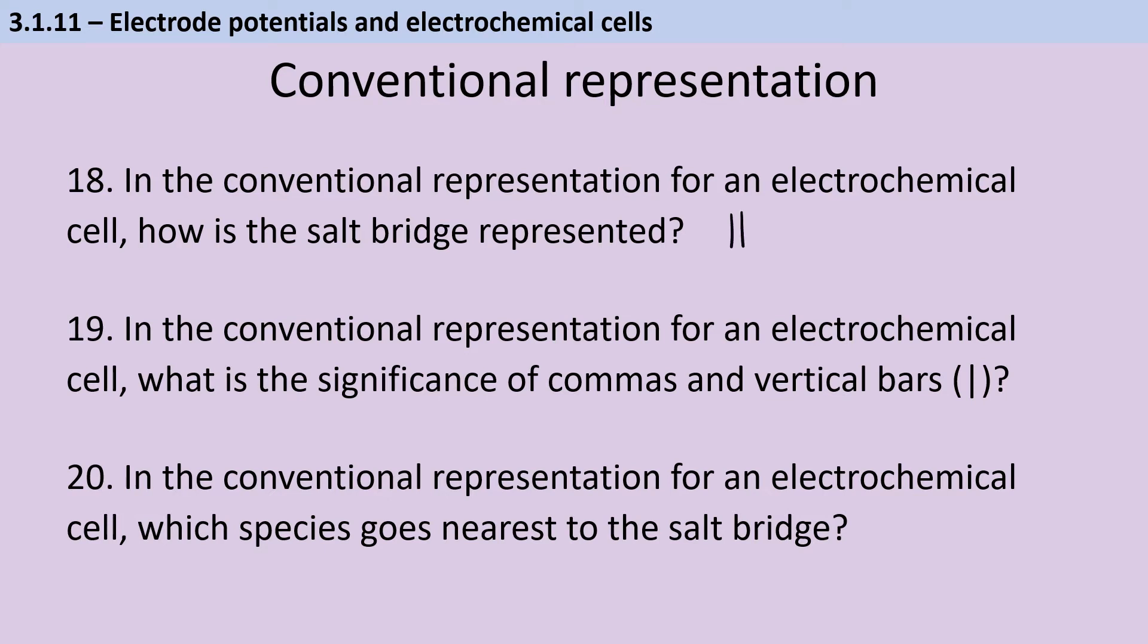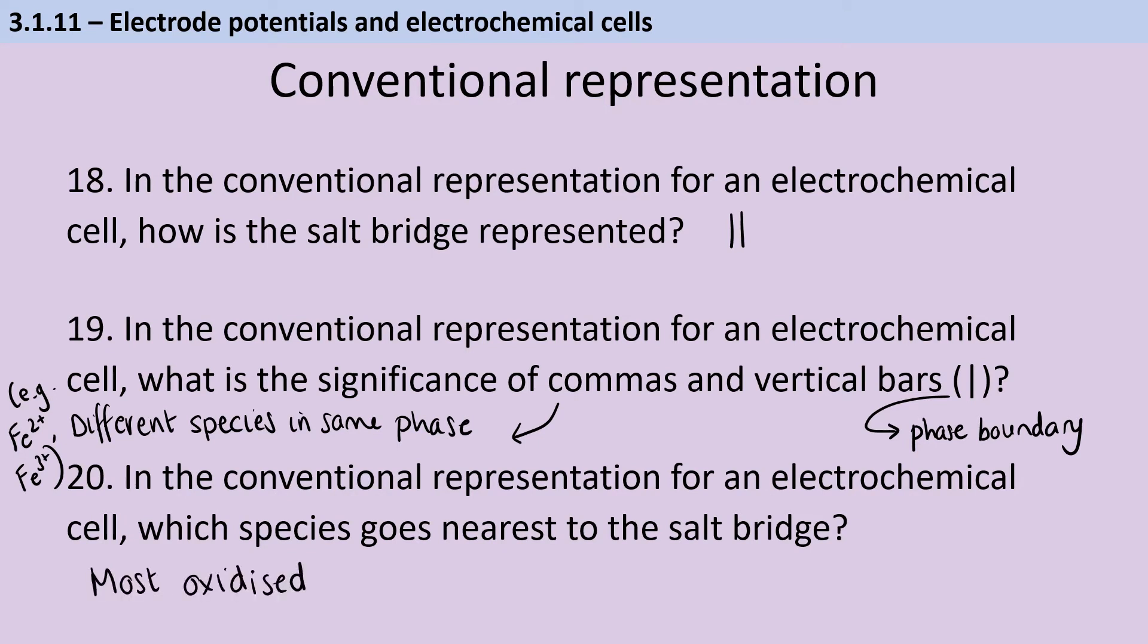If you see commas, this tells us that we've got multiple species that are in the same phase. So for instance, in a redox electrode where we've got maybe iron 2+ and iron 3+, they're both aqueous. So they're not separated by a vertical bar, but they're separated by a comma instead. The vertical bar shows us that there's been a phase boundary. So for instance, if we've got an aqueous electrolyte and that's separated from the solid electrode. In conventional representation, it's the most oxidized species that goes next to the salt bridge.